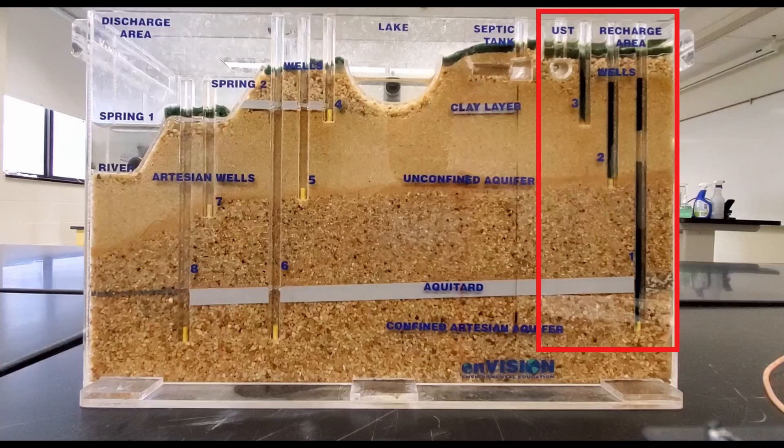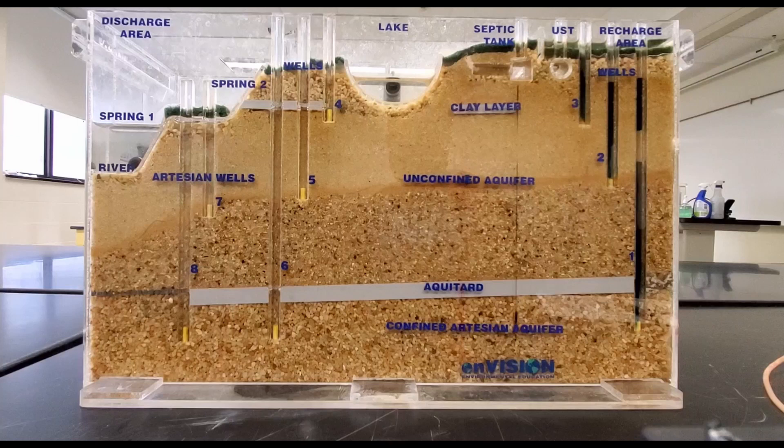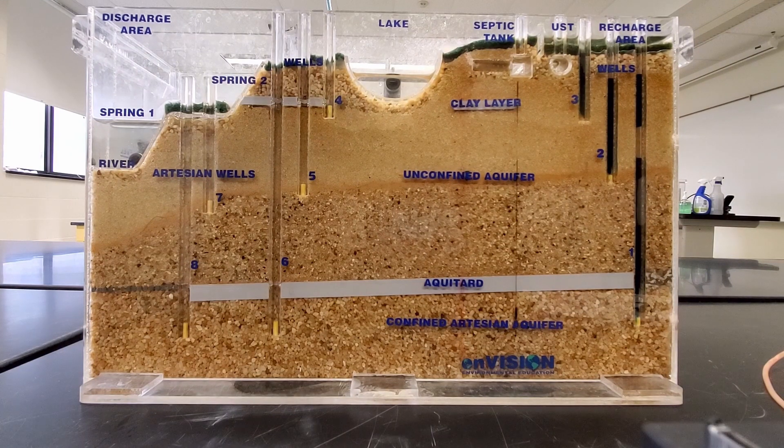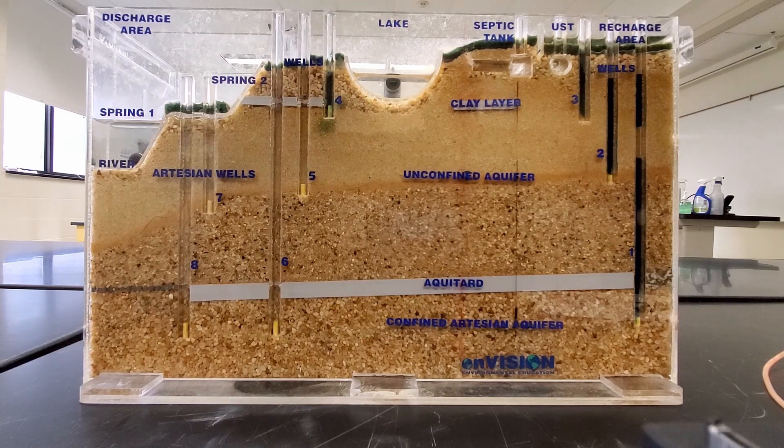This model has already had contamination added to the wells on the right side, which is represented by a dark colored dye. Contamination of a well can have several different sources from nearby landfills, septic systems, road salts, storage tanks, and many others. The model is designed to visualize how groundwater contamination spreads.